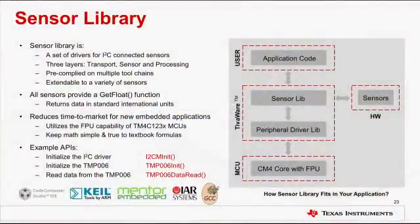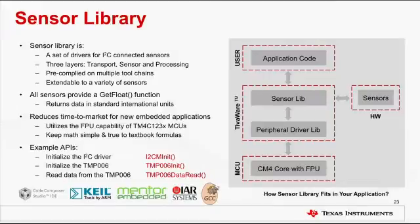TivaWare for C-Series also comes with a sensor library that allows you to develop embedded applications using different sensors with TM4C123X microcontrollers. The sensor library is organized in three layers: transport, sensor, and processing layers. It provides drivers and API functions to initialize and configure a variety of sensors to measure temperature, pressure, acceleration, magnetism, and physical orientation. The sensor library benefits from the floating-point capabilities of TM4C123X microcontrollers to process raw sensor data and present it in standard international units, enabling greater convenience and simplicity.